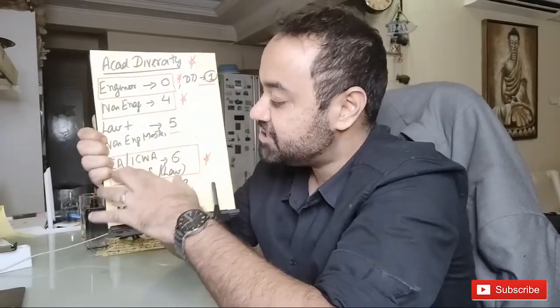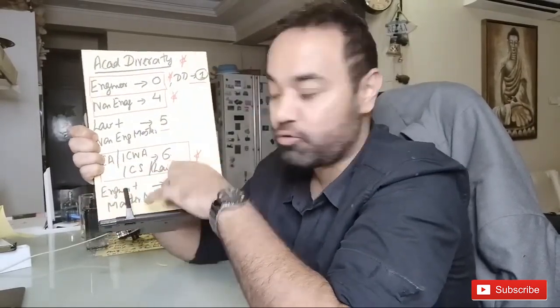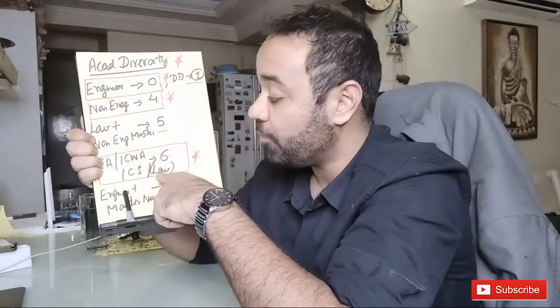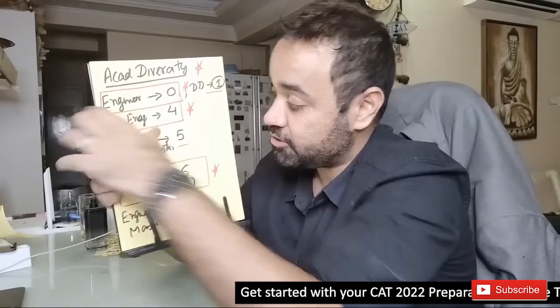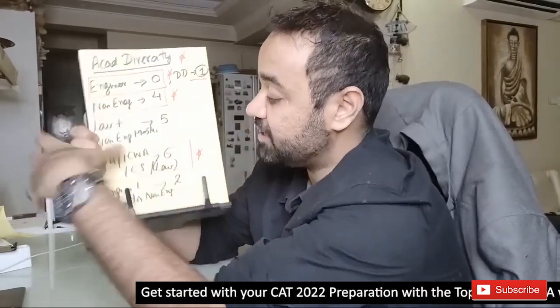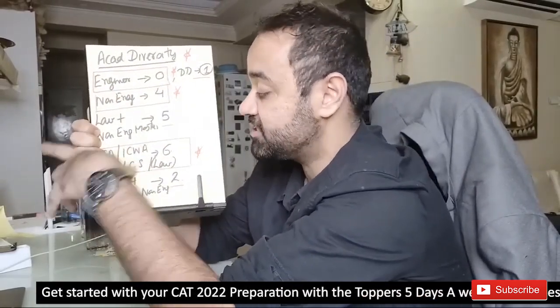Anyway, lawyers party on. CA, ICWA, and CS, you will get 6 points. And if you have a combination here, it's very big. Law plus non-engineering master gives 5 points. Law, CA, ICWA, CS - you will get 6 points.